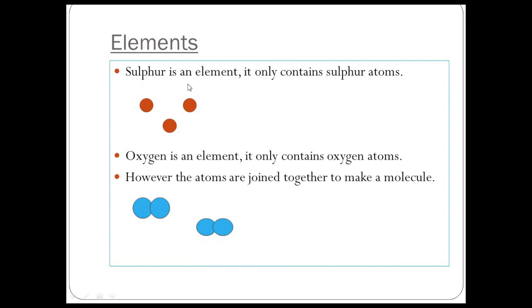Sulfur is on your periodic table. You can find it—you should be able to find it towards the right hand side. Sulfur contains atoms of sulfur. The atoms are on their own.